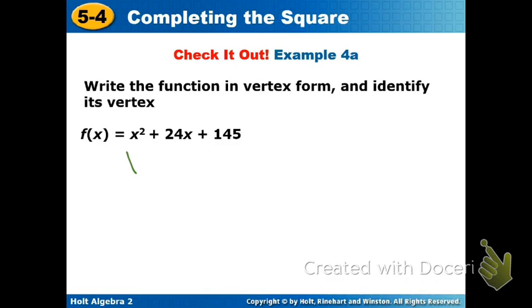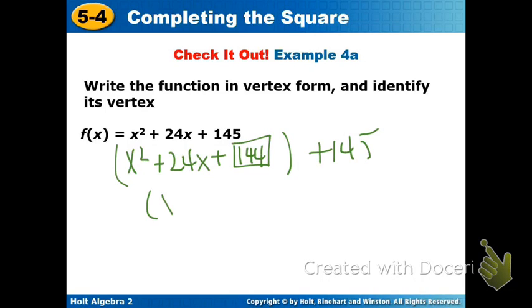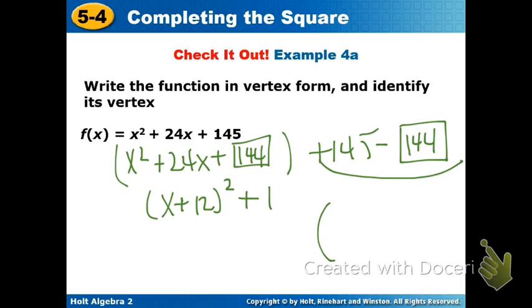Okay, so you had 5x squared plus 24x plus your completion. I'm going to put the 144. So your completion was 144 because half of 24 is 12. So what was your binomial? X plus 12 squared. What did I forget? We're going to take him out over here, so our 144 over here. So what's 145 minus 144? 1. So plus 1. So that gives you a vertex of negative 12 and positive 1.